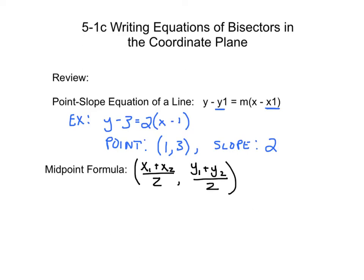A second thing we need to review is the midpoint formula. The midpoint formula says x sub 1 plus x sub 2 divided by 2 — basically you add the x's and divide by 2 — and y sub 1 plus y sub 2 divided by 2. You add the y's and divide by 2.